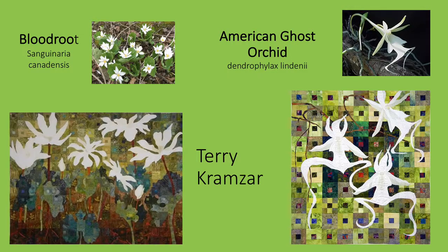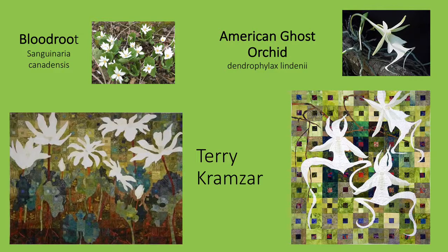These are two other quilts by Kramzer. The left-hand quilt depicting Bloodroot was likely also inspired by her walks along the Appalachian Trail — she has nicely captured the lobed basal leaves, thick stems, and many-petaled white flowers. The quilt on the right depicts the American ghost orchid, a plant I learned about because of her quilt. This rare flower is native to Florida and Cuba, and is sometimes also called a frog flower. Both the quilt and the plant are quite remarkable.